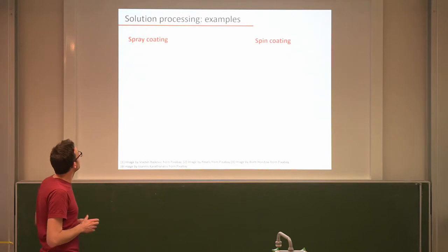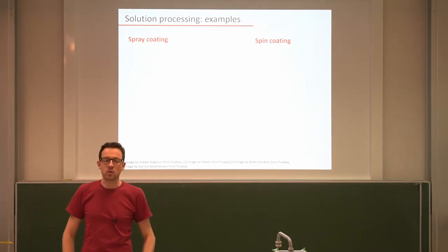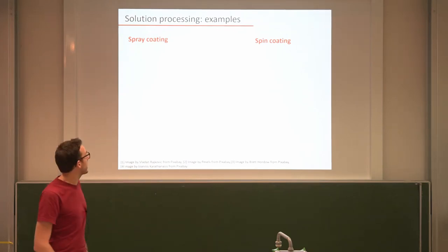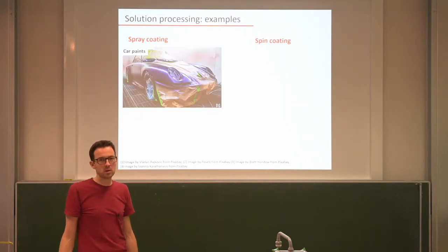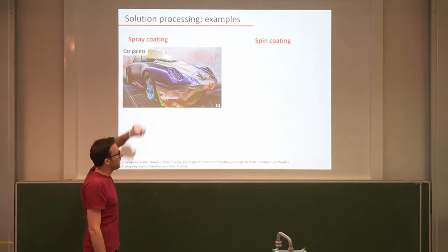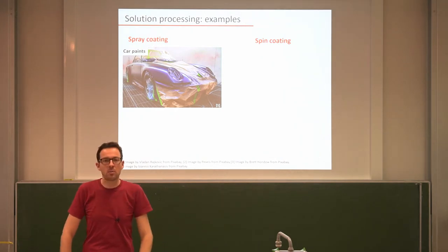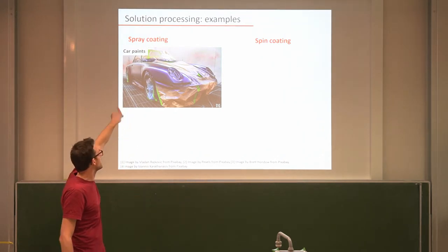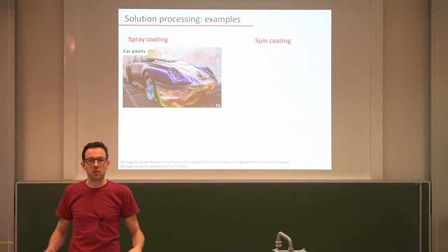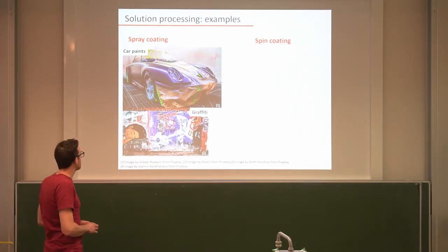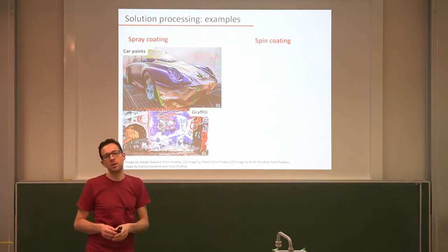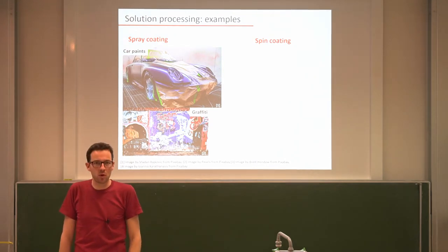Let's first recapitulate: which products do we know that take advantage of certain processes? If you think about spray coating — where do you spray coat polymers? Well, for example, car paints. They are typically applied as spray coating of a dissolved polymer in an organic solvent, which is why you need specially ventilated areas. It then dries out and forms a very hard, scratch-resistant coating. Graffiti is another example, where polymers act as a binder material to keep colorful pigments on the wall.